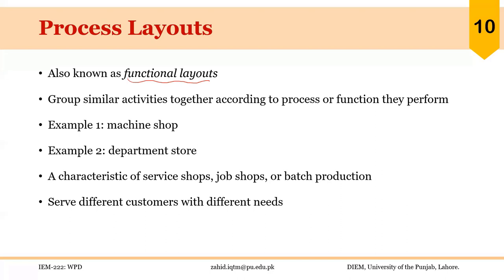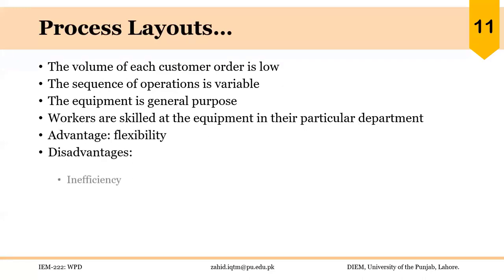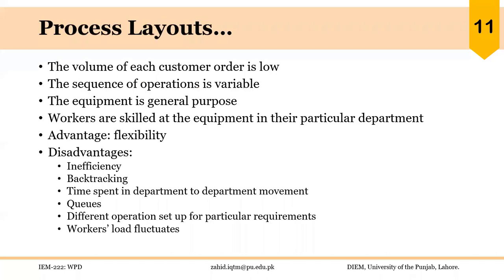Process layouts are characteristic of service shops, job shops, or batch production, and are used where customers have different needs. In manufacturing, a similar family of products is made, but the products are very different from each other. For example, in a jobbing process making tools and dies, each die or mold requires similar machines and processes, but each is very different in size, material, number of cavities, and gating system. The volume of each customer order is low and the sequence of operations is variable.